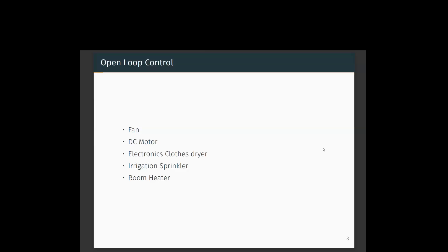For a room heater, we fix the temperature at a particular level and it goes on heating the room. At a certain point, if the outside temperature cools down and the room temperature also cools down, the room heater — which was set at a particular temperature earlier — will still go on generating the same heat. So based on the input you give, you get that output temperature.